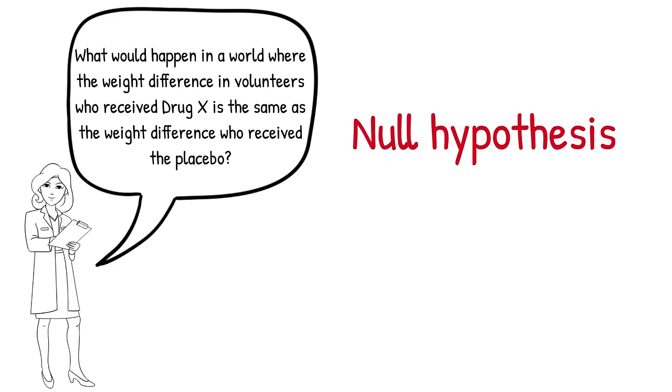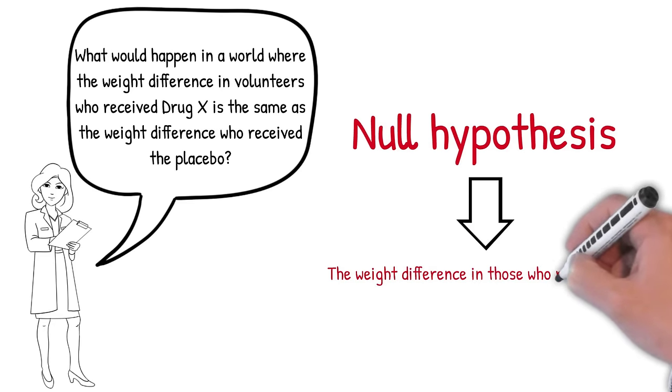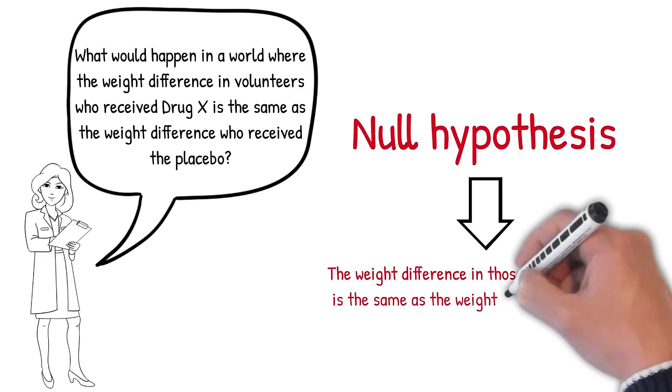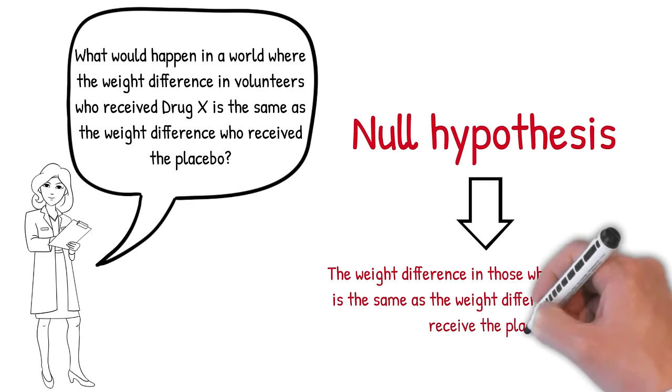Usually, the null hypothesis states that there is no difference between groups. So, our null hypothesis is that the weight difference in those who receive drug X is the same as the weight difference in those who receive the placebo.